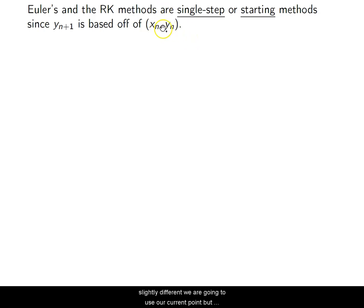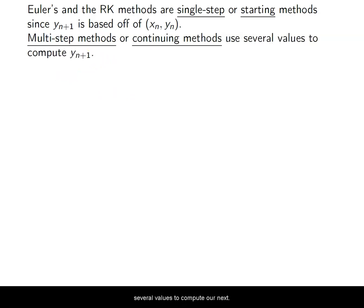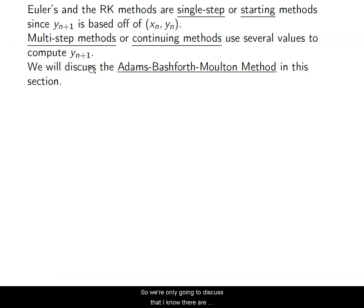So what we're going to do now is slightly different. We are going to use our current point, but we're going to find several points and then use several points together to find new points. So multi-step methods or continuing methods use several values to compute our next point. We're only going to discuss the Adams-Bashforth-Moulton method in this section.